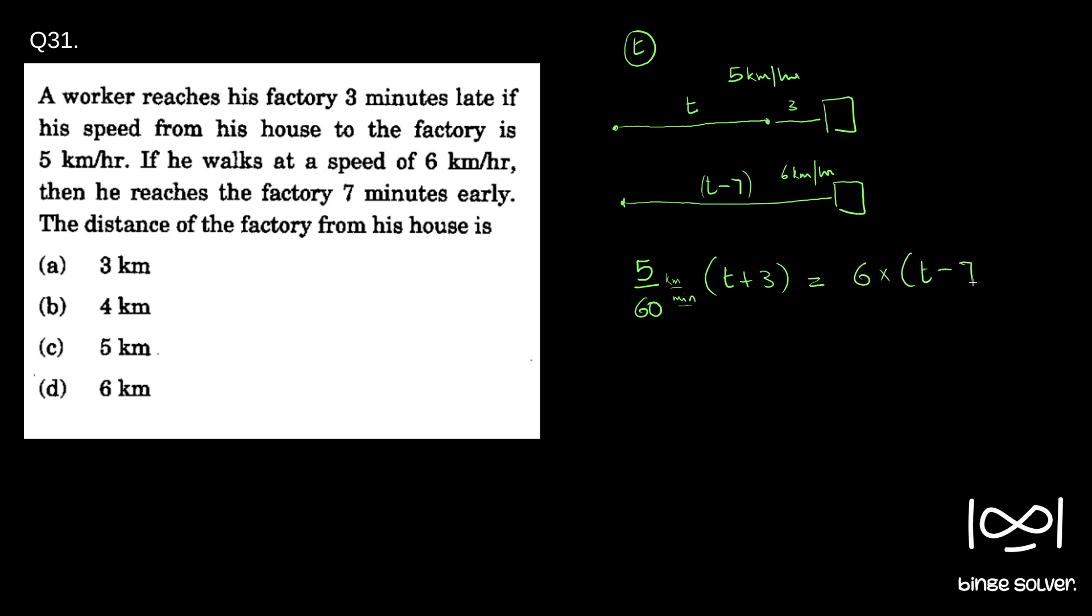So 5 by 60 into t plus three, the time taken in minutes to reach the factory, is equal to 6 by 60 into t minus seven. Simple equation. The distance is the same, so he walked at a speed of 6 kilometers per hour into t minus seven minutes. These two are the same, so we equate them.